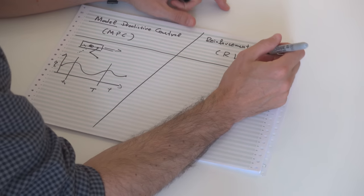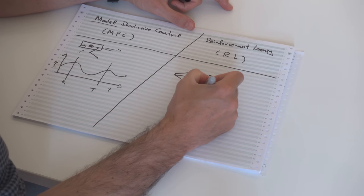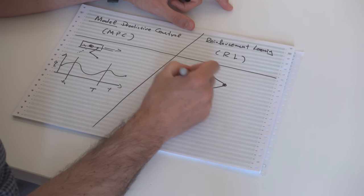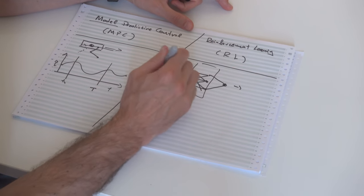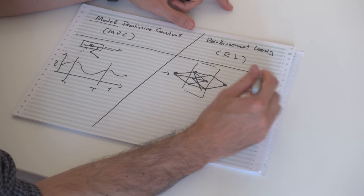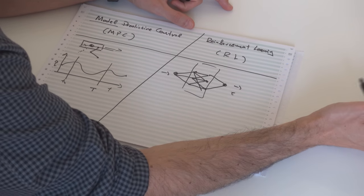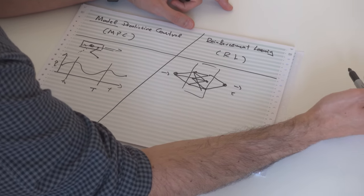On the other side, we have a more recent development on the machine learning side of control, where we train a neural network. The idea is that this neural network takes as input the state of the system and outputs a vector of control inputs — be that torques, position, desired position, desired velocities and so on — that accomplish a target we set for the robot.